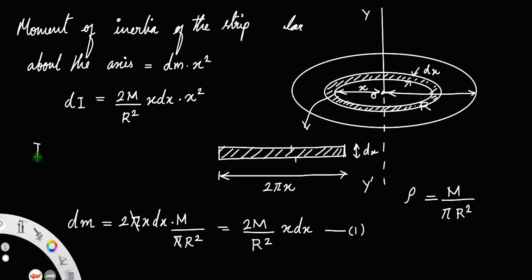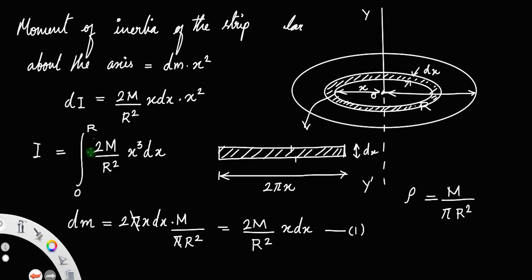In order to get the total moment of inertia, we must integrate this expression: 2m/r² times x³·dx. Since x is the distance of the strip from the axis, x varies from 0 to r, the radius of the disk.